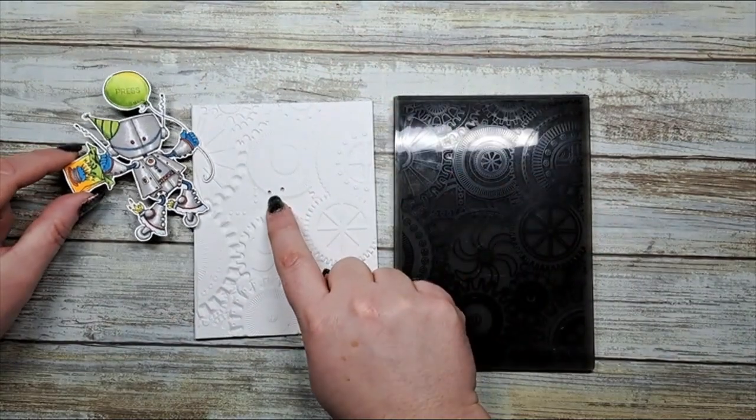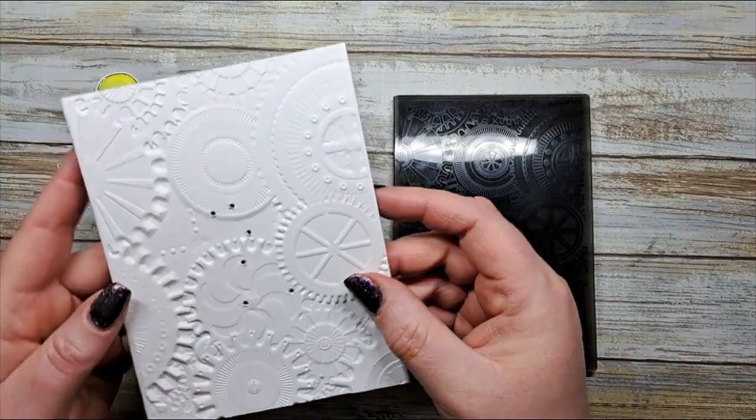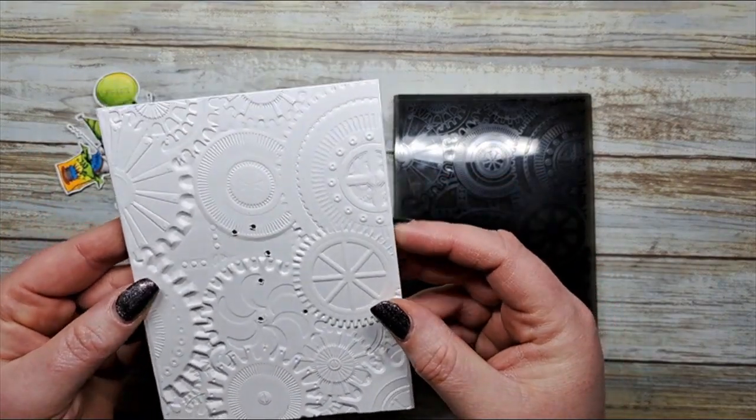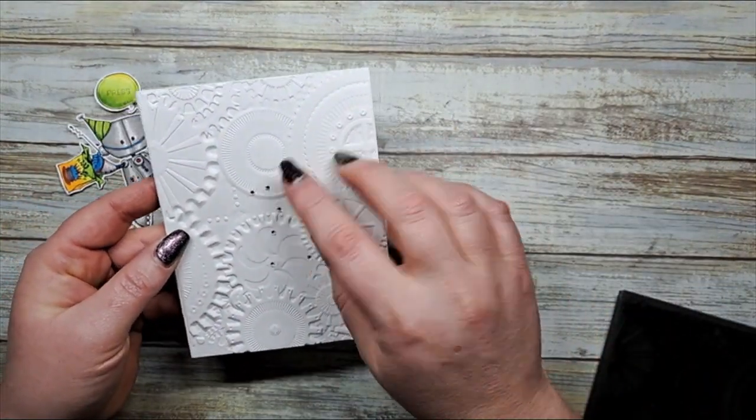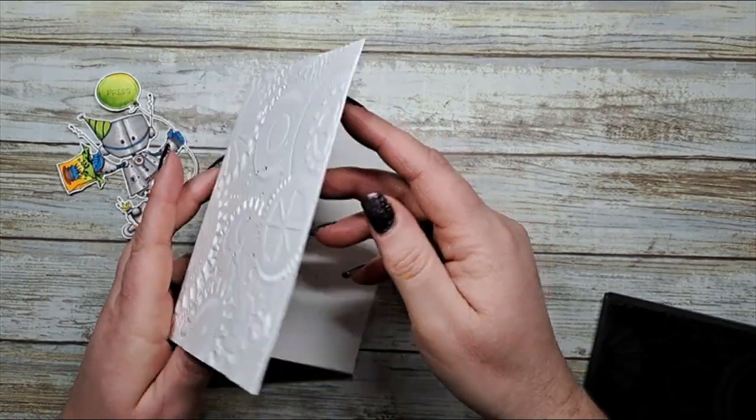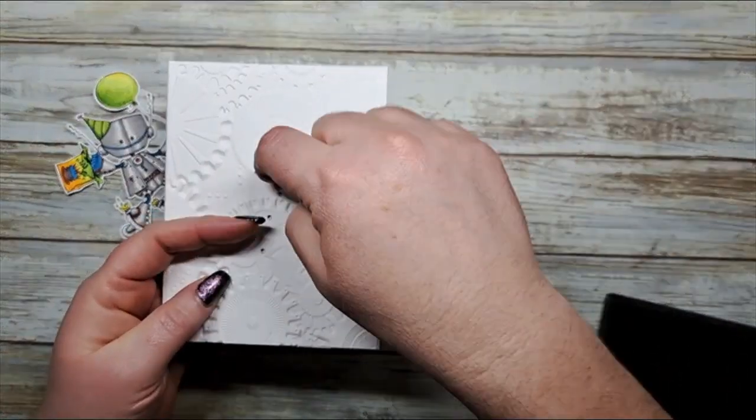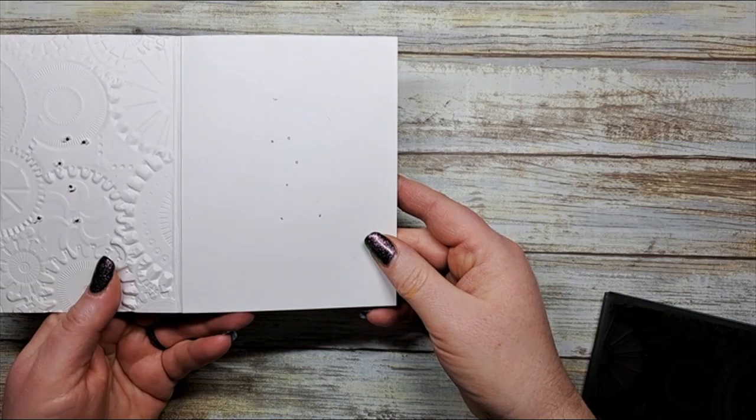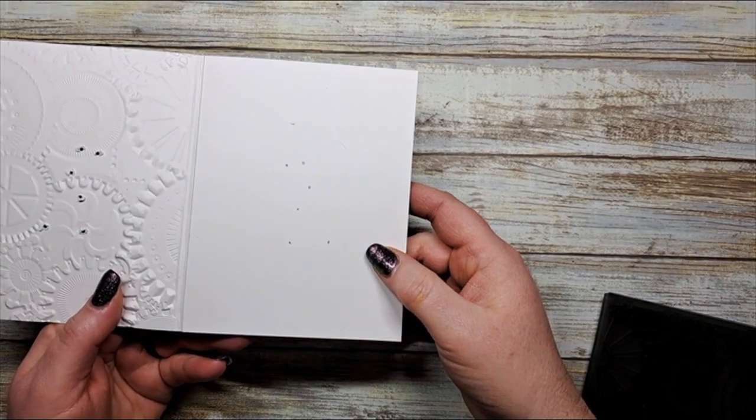So I've transferred that information to the front of my embossed card here. I've punched some holes with my scissors and I've also gone through with a pencil and marked them on the inside. Let's get started with our circuit.